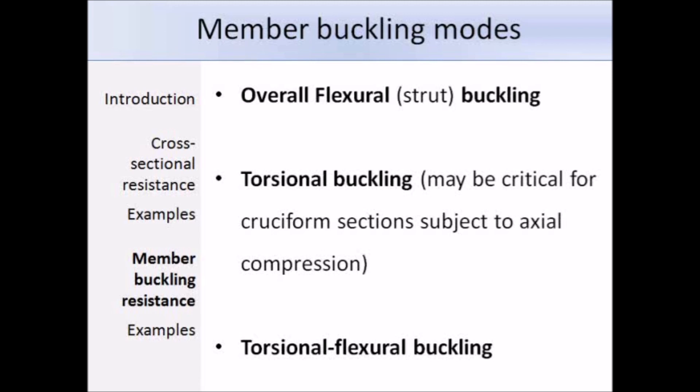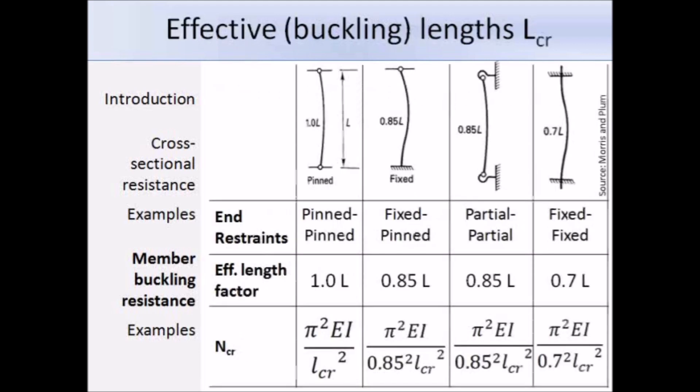In the Eurocodes there is no guidance on the buckling lengths for compression members with different end conditions. I recommend that you should adopt the buckling lengths used in BS 5950 and you could also refer to the non-contradictory complementary information document SN008 which gives some guidance on effective length factors. This table shows you effective length factors for some columns held effectively in position at both ends. For a column with both ends pinned, the effective length factor is 1, and for a column with both ends fixed, the effective length factor is 0.7.